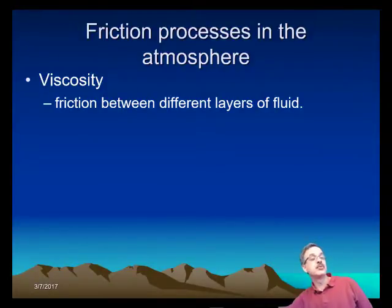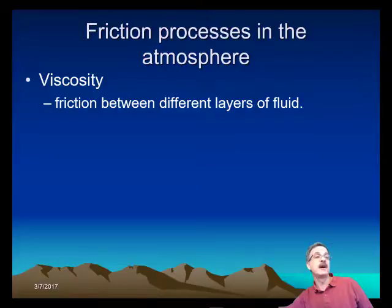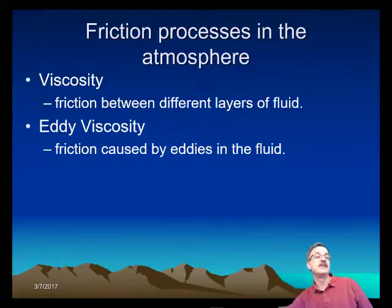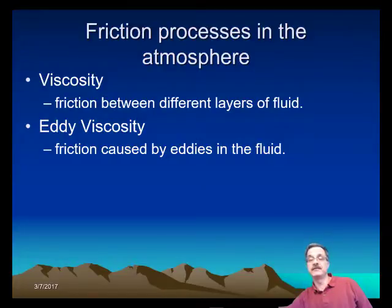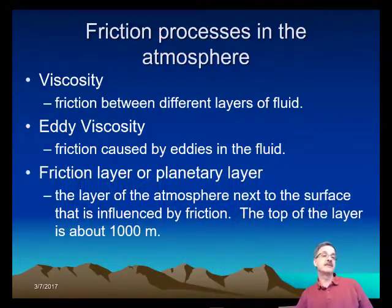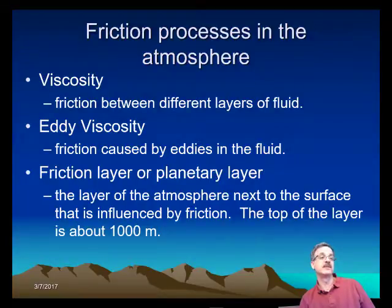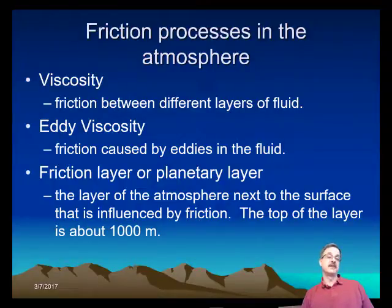An important property of friction is something called viscosity. If you divide wind flow into different individual layers, the friction of these individual layers with the layers above or below is referred to as viscosity. You can also have eddy viscosity — friction caused by eddies in the fluid. There is a friction layer, or planetary layer, that exists in the atmosphere about a thousand meters from the surface up, and this is the layer influenced by friction from surface features that cause eddies to form.